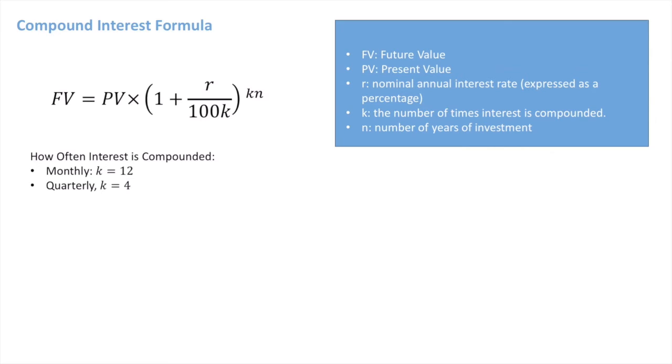Now let's go ahead and work through an example. We're told that Isabel decides to invest 35,000 euros at a nominal annual interest rate of 6% compounded quarterly.